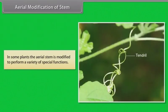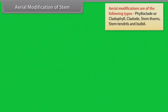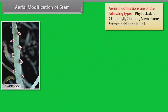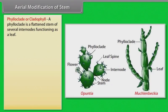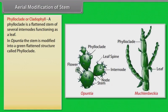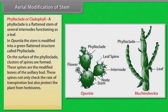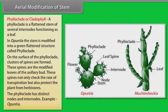In some plants, the aerial stem is modified to perform a variety of special functions. Aerial modifications include: phylloclade (or cladophyll), cladode, stem thorns, stem tendrils, and bulbil. A phylloclade is a flattened stem of several internodes functioning as a leaf. In cacti, the stem is modified into a green flattened structure called phylloclade. On the surface of the phylloclade, clusters of spines are formed — these spines are the modified leaves of the axillary buds. These spines check the rate of transpiration and protect the plant from herbivores. The phylloclade has distinct nodes and internodes. Example: Opuntia.